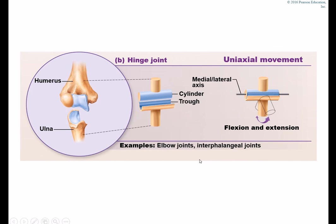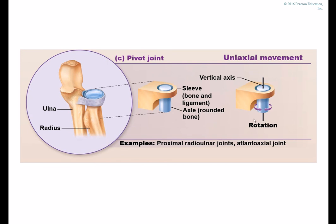Hinge joints — think of a door hinge. The cylinder moves within a trough, like the trochlea of the humerus fitting into the trochlear notch of the ulna. Hinge joints allow uniaxial movement along a medial or lateral axis — specifically flexion and extension. Examples include the elbow joint, the interphalangeal joints, and the knee joint.